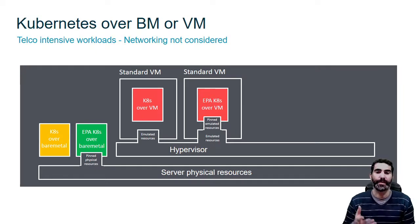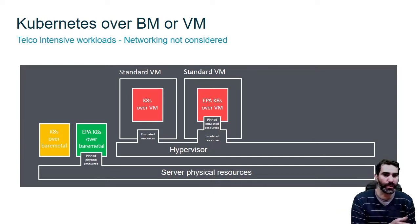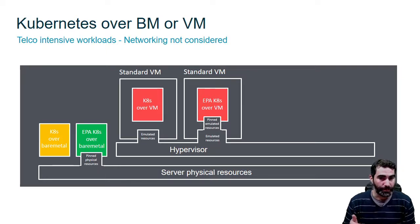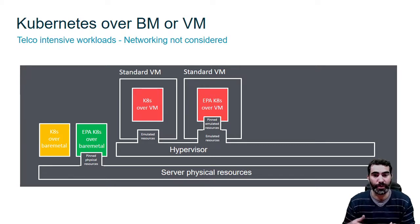We could be tempted to install an EPA Kubernetes over a VM because we will be removing one of these two levels. But the thing is that we still could be using emulated resources that we are going to be sharing with other VMs in our server. So it's not going to be good performance, and at the same time, since we are pinning the emulated resources to the pods, it's going to be less efficient in terms of hardware usage — we are dedicating these emulated resources and therefore we are going to be able to run fewer pods in these nodes.